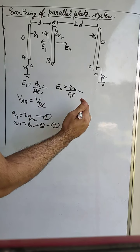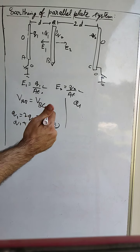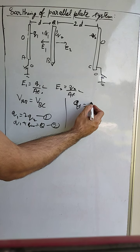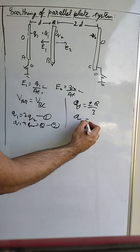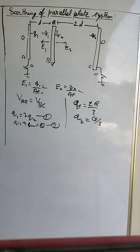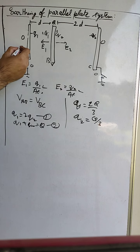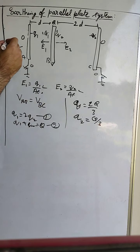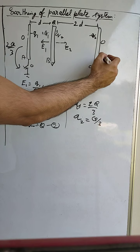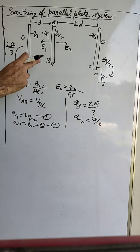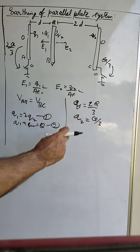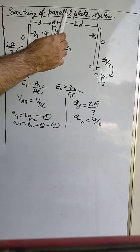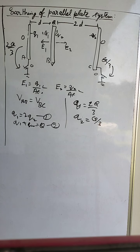Solving the first and second equations, Q1 comes out to be 2Q/3 and Q2 comes out to be Q/3. So on closing the switches to earth, the surface with +Q1 had charge +2Q/3 and the surface with +Q2 had charge +Q/3. Therefore, charges of 2Q/3 and Q/3 flowed into the earth when the switch was closed. These are the final values of Q1 and Q2.